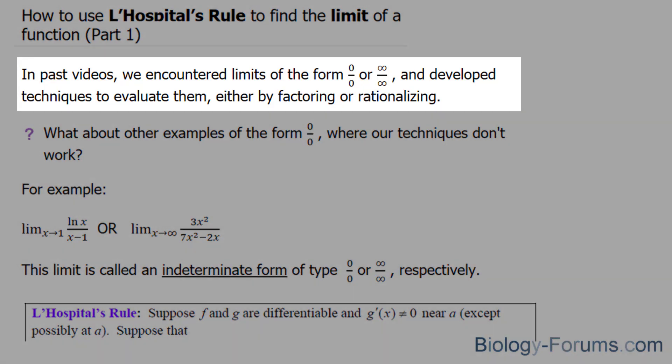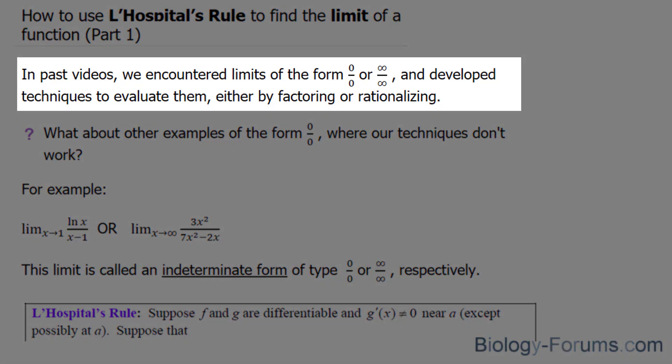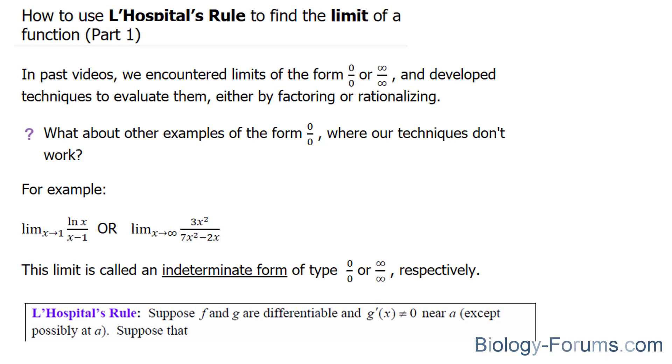In past videos, we encountered limits of the form 0 over 0 or infinity over infinity, and we developed techniques to evaluate them, either by factoring or rationalizing. But what about other examples of the form 0 over 0 or infinity over infinity, where techniques don't work?